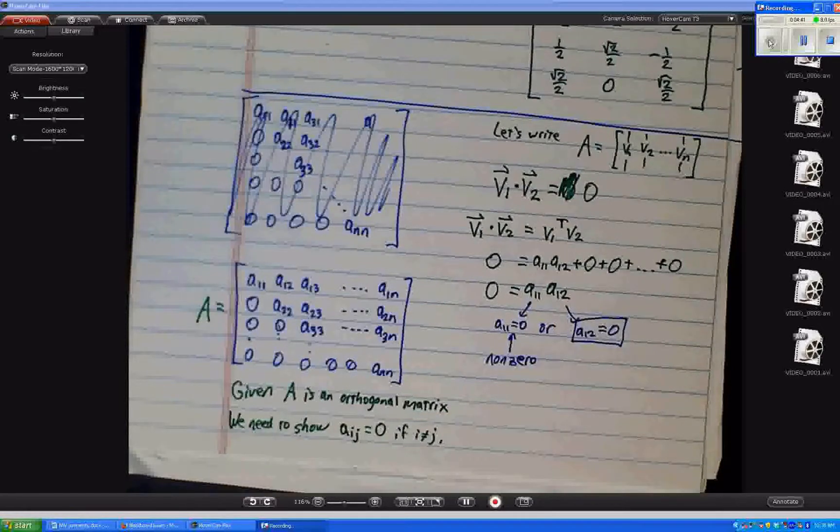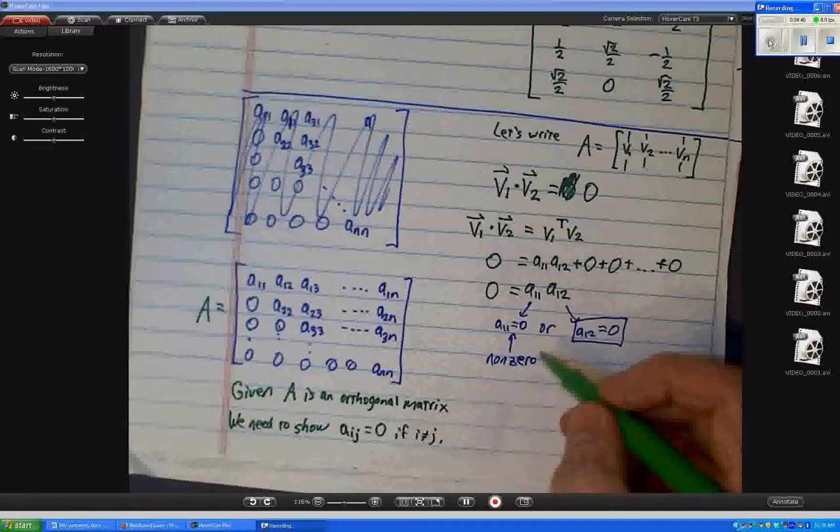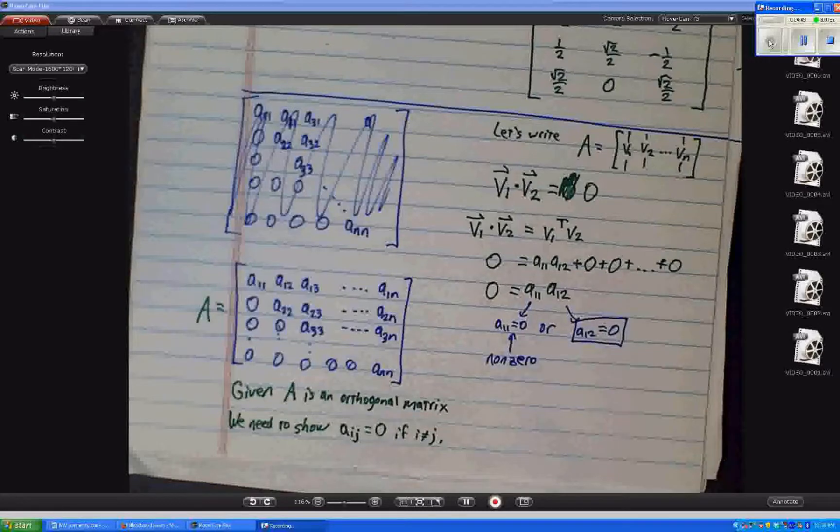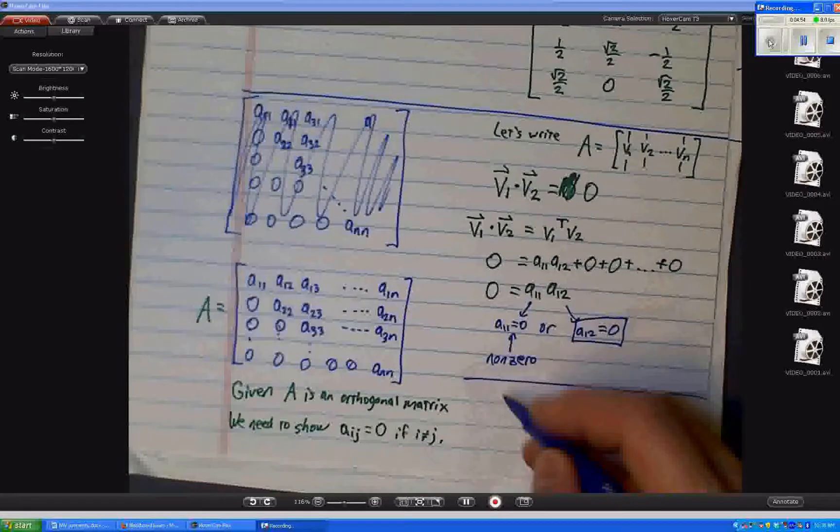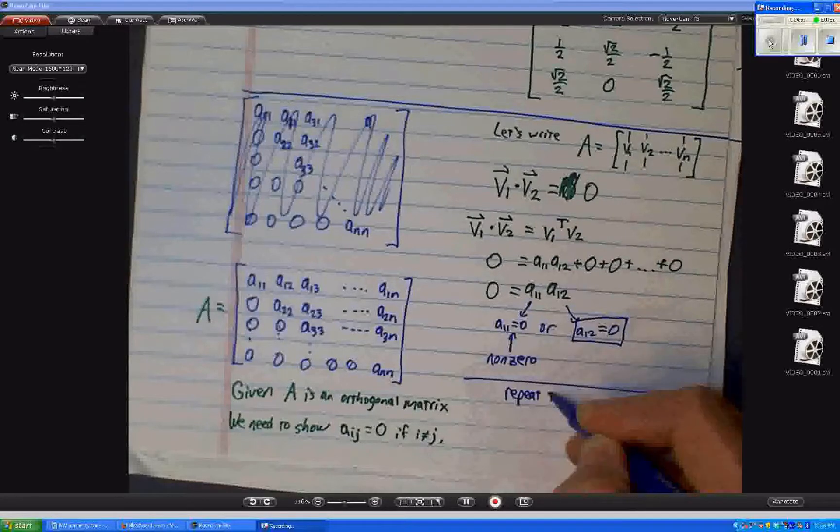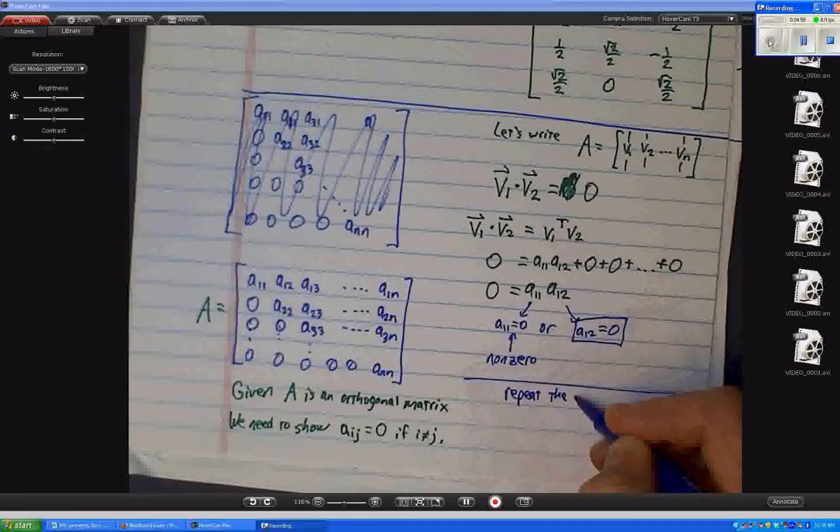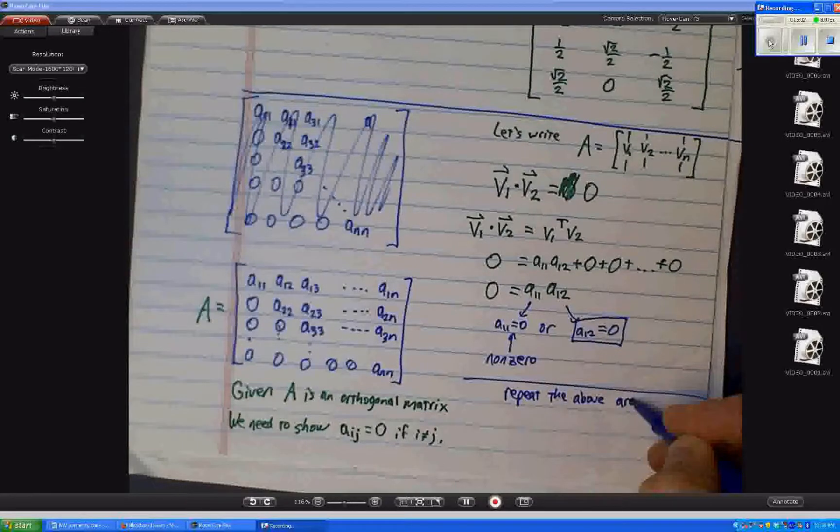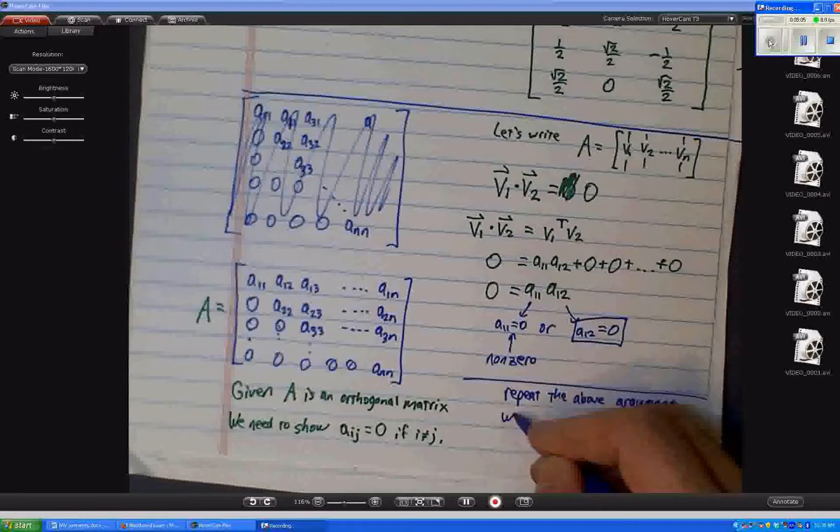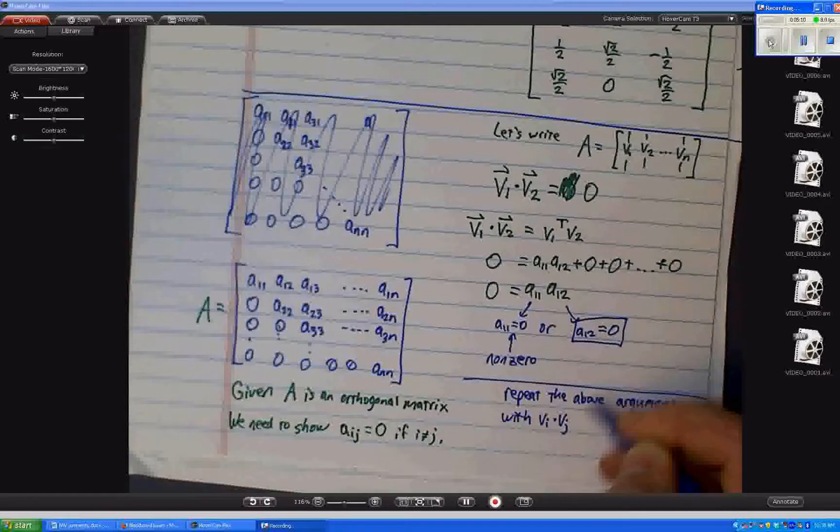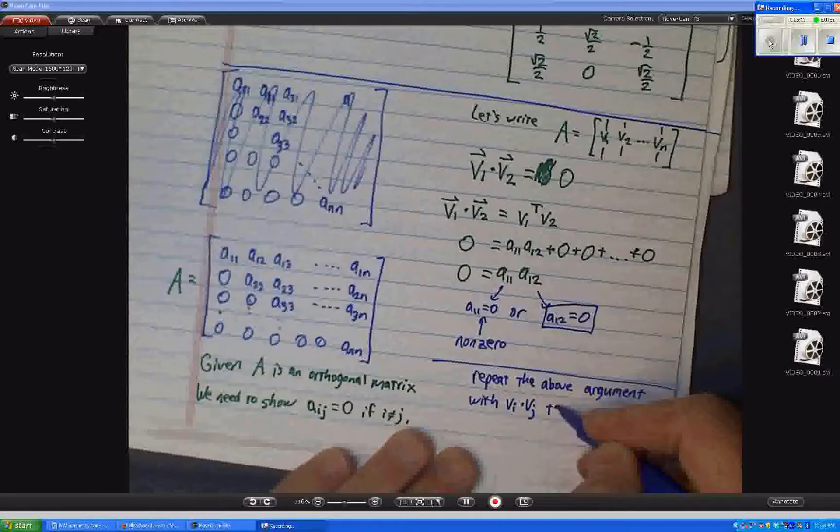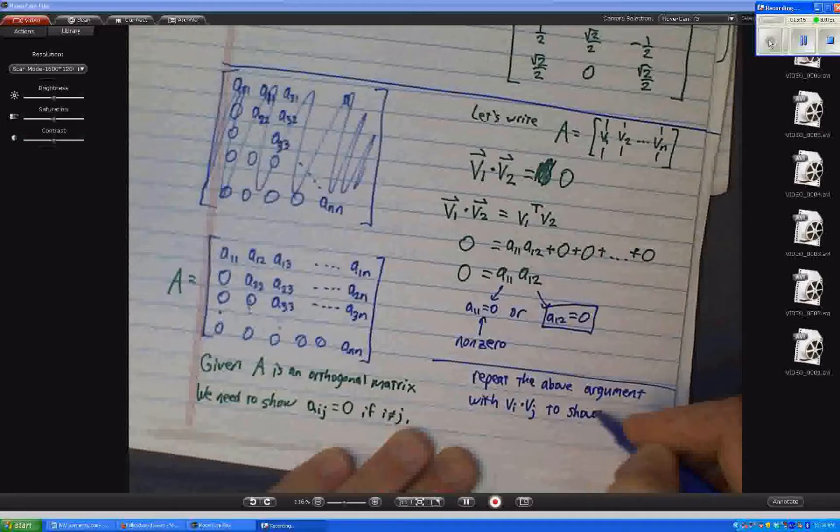And then, basically, you just repeat that argument as often as you need to. So, if you repeat the above argument with Vi dot Vj to show that Aij equals 0.